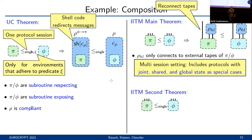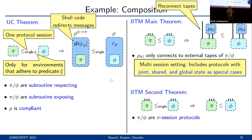To also support single-session security analysis, the IITM model provides a second composition theorem, which states that if a single session of pi realizes a single session of phi, then an unbounded number of sessions of pi realizes an unbounded number of sessions of phi. This holds true as long as pi and phi are sigma-session versions — essentially having disjoint state — and can be combined with the previous composition theorem to yield more complex compositional statements.